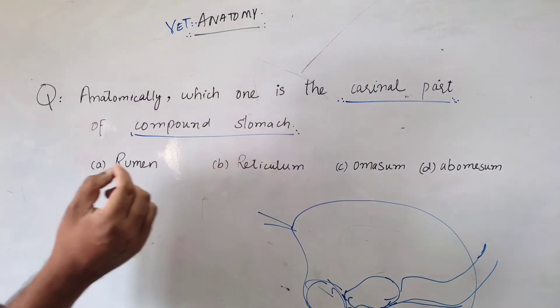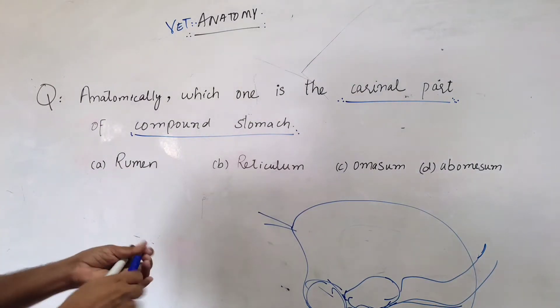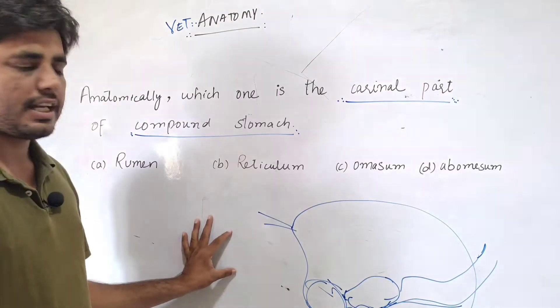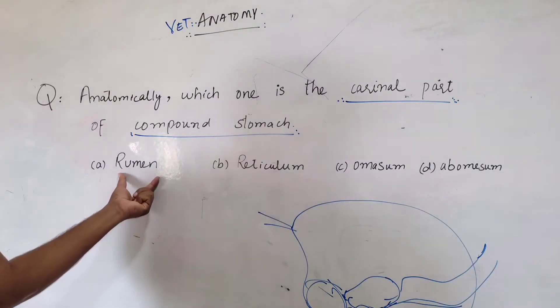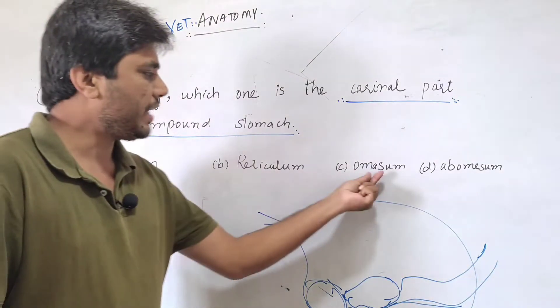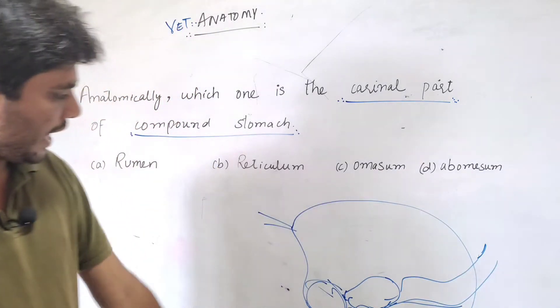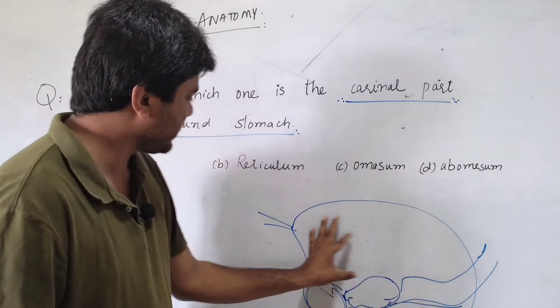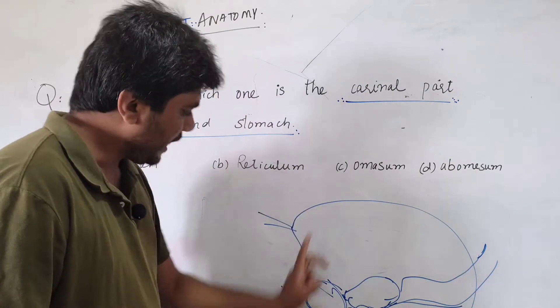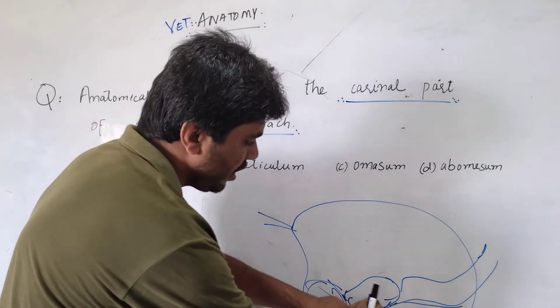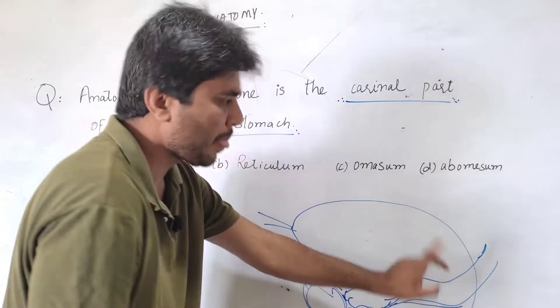There is a little confusion here because normally we consider that rumen is the first part, reticulum is second, omasum is third, and abomasum is fourth. Which is somehow true because the large portion is rumen, then reticulum, then omasum, then abomasum.